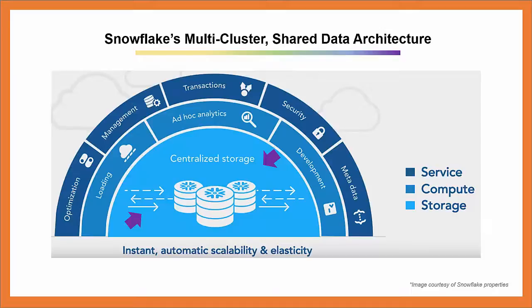The volume of data you can have in this data warehouse is unlimited. The compute layer, pointed to by the yellow arrows, is the part that does all the work. In Snowflake terms, they're called virtual warehouses — a set of nodes to do all the processing of data. You can have multiple virtual warehouses working on the same data at the same time because of the third layer.